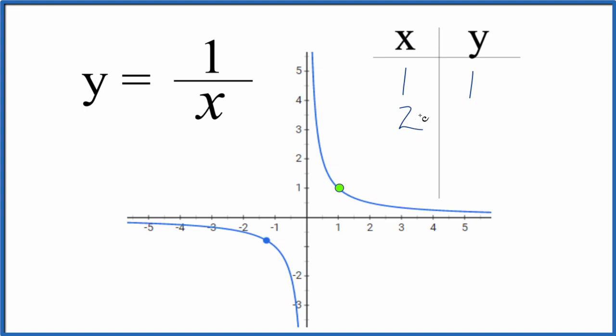How about if x is 2? Well, y equals 1 over x, y equals 1 over 2. So we have 1 half. We go to x is 2, and up here's 1, so 1 half. x is 2, y is 1 half. That's our next point.